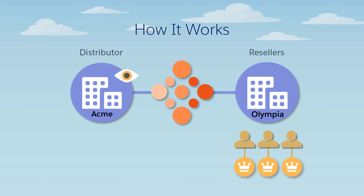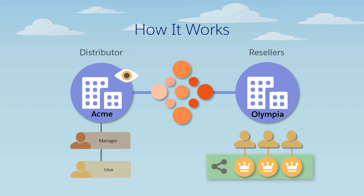Let's see how it's done. Pacifica creates a sharing rule on the opportunity object. The sharing rule gives access to opportunities owned by Olympia users assigned to the user role, to Acme portal roles and subordinates.